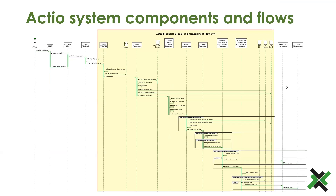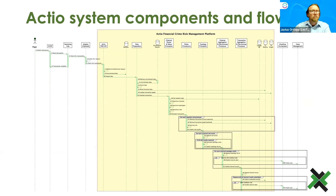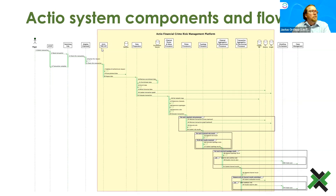I'll now give an overview of the components built during this PI. This is an end-to-end representation of the Actio flow. Information flows from a payer through a DFSP, at which point the message is handed to Actio for evaluation. Our flow covers the Actio TMS API, a data preparation step, the channel router and setup processor, rules processors where evaluations take place, and then the typology processor.